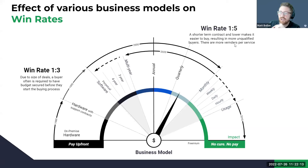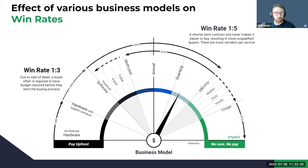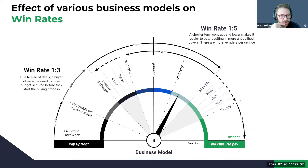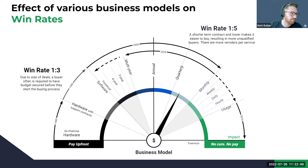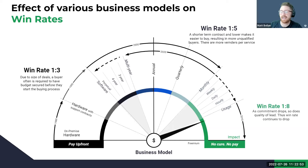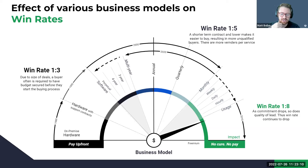As we go to subscription, the win rate changes to about one-to-five. A really good industry standard ratio is 20% for subscription models. The reason you have a lower win rate is because contracts are shorter and it's easier to buy, so people are coming in who aren't totally qualified — you need more sophisticated qualification metrics and better discovery calls, with more vendors per service. For consumption, you'll see one-to-eight — a super low conversion rate because some of these are free and they don't turn into customers until after they're already using your product.